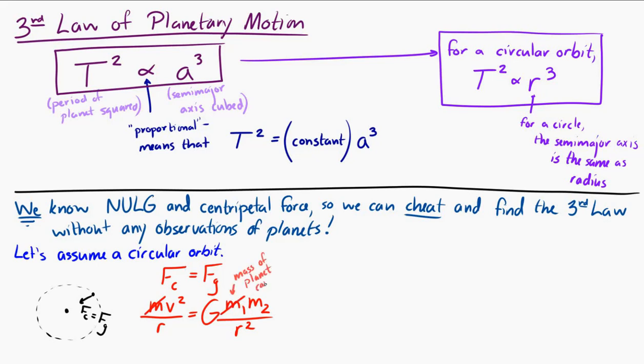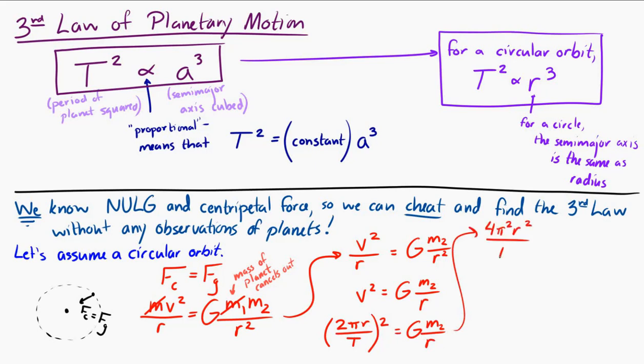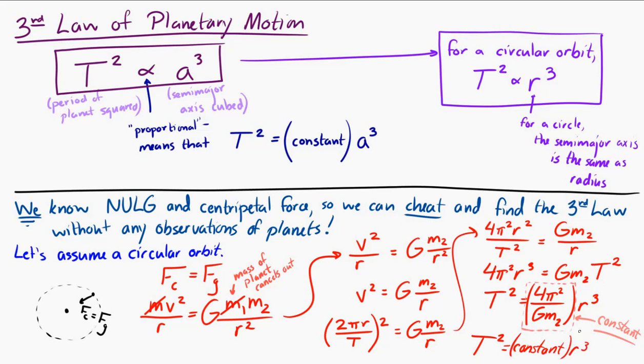And we can cancel out one of the masses. The mass that cancels out is the mass of the moving object, the mass of the planet. And so we're left here. And I can solve for v squared. And then I can replace v with 2 pi r over T, T being the period. A little algebra. And now I can solve for T squared. And if I do, T squared is equal to 4 pi squared over Gm2 times r cubed. And what do you know? 4 pi squared over Gm2, that's constant. So that's Kepler's third law. T squared is equal to some constant times r cubed.